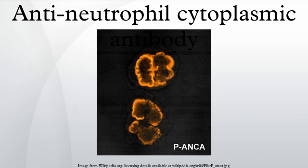ANCAs were originally described by Davies et al. in 1982 in segmental necrotizing glomerulonephritis, and by van der Woude et al. in 1985 in Wegener's granulomatosis. The second international ANCA workshop, held in the Netherlands in May 1989, fixed the nomenclature on perinuclear versus cytoplasmic patterns, and the antigens MPO and PR3 were discovered in 1988 and 1989 respectively. International ANCA workshops have been carried out every two years.